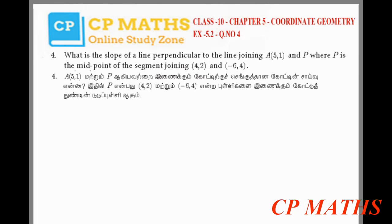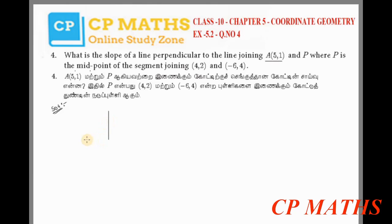Hi students, CP here. Class 10, Chapter 5 Coordinate Geometry, Exercise 5.2, Question 4. What is the slope of the line perpendicular to the line joining A(5,1) and B? We need to find the slope of the perpendicular line. Let's arrange a diagram for the line first.